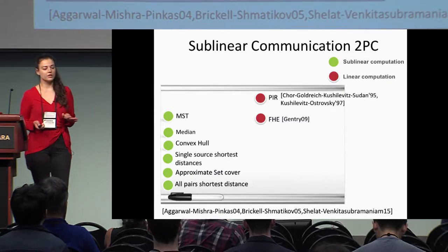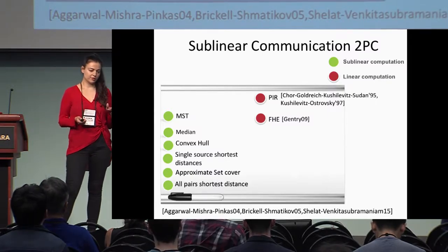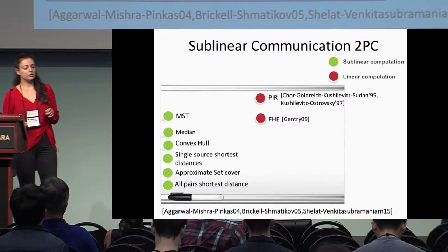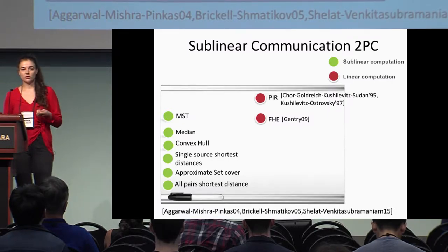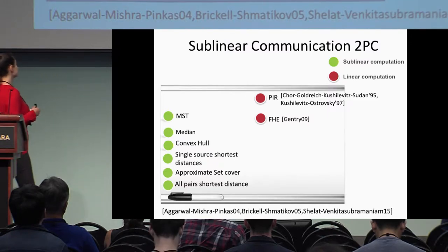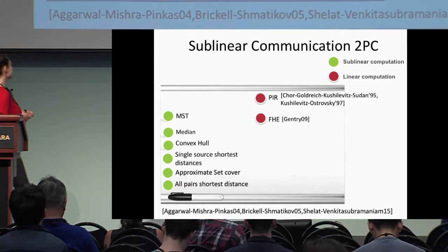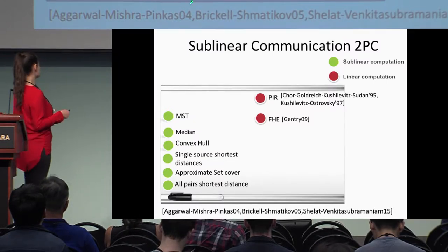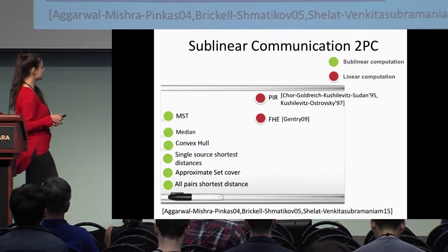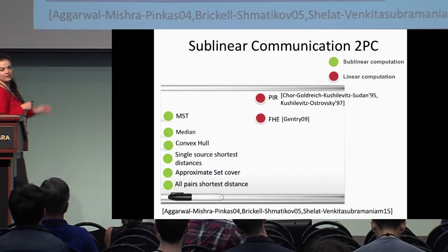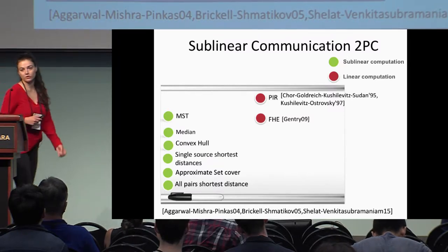But there are some exceptions — some combinatorial problems, specifically some graph problems where the two parties have parts of the graph, that actually enjoy sublinear computation and communication complexity. Like the median, convex hull, single-source single-destination, approximate set cover, all-pairs distance, and minimum spanning trees. Works by Agrawal et al., Brickell, Matiков and Shelat, and Mutu provide what I call easy protocols, which enjoy sublinear communication and computation.